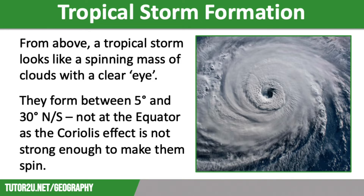Tropical storms occur within the tropics between 5 and 30 degrees north and south of the equator. However, they don't actually occur along the equator. This is because the Coriolis effect is not strong enough to make the storm spin. The Coriolis effect is the effect of the Earth's rotation. The sea temperature needs to be 27 degrees, which is close to the temperature of a heated swimming pool. This is one of the reasons we do not get tropical storms in the UK, as the maximum sea temperature in the UK tends to be 17 to 18 degrees.